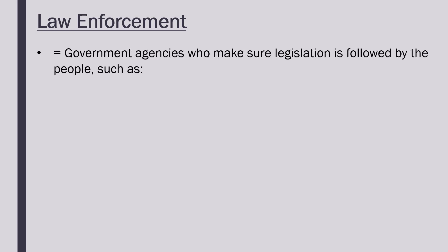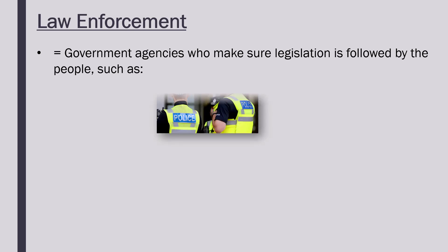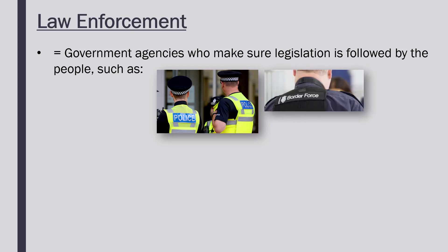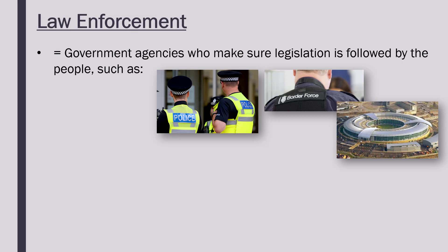How can data be used in law enforcement? Law enforcement includes the government agencies who make sure legislation — so laws — are followed by people. We tend to think just of the police, who comprise the main body enforcing laws. But also other agencies like the border force, passport control, and the intelligence agencies — so MI5, MI6 and GCHQ. They're not as visible as the police but they do still exist.